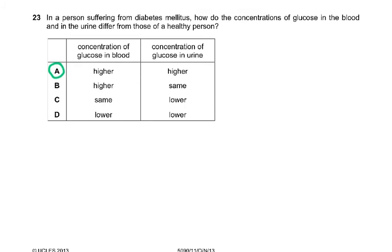Question 23: In a person suffering from diabetes mellitus, how do the concentrations of glucose in the blood and urine differ from those of a healthy person? Urine contains no glucose in a healthy person. The answer is A — glucose concentration in the blood is higher because no insulin is being released, so glucose is high in the blood. And in the urine it will also be high. In a normal person, there is no glucose in the urine, even if you eat a lot of sweet food.